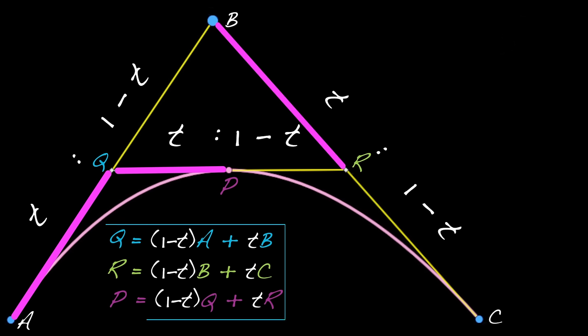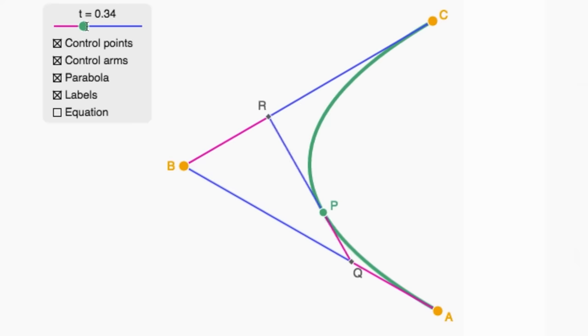We should now have some experience in computing points on parabolas using the formulas that we wrote down in the previous video. These formulas are based on the hypothesis that all of these ratios are in the same proportion, and that proportion is governed by t.